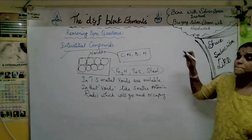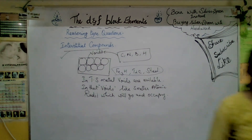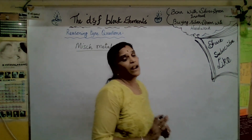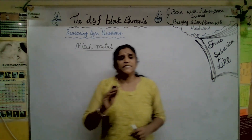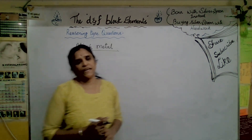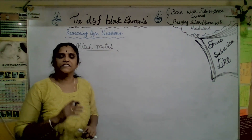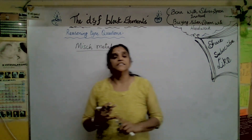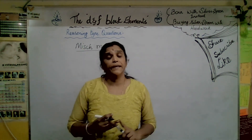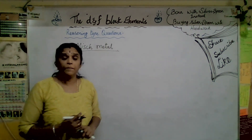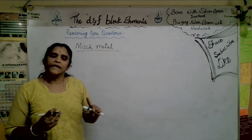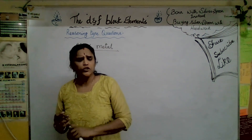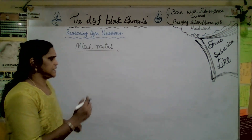What do you mean by misch metal? Misch metal is an alloy of cerium - about 25 percentage - and the rest includes other lanthanoids, iron up to 5 percentage, and trace elements like sulfur, carbon, calcium, and aluminium. It is a pyrophoric material.